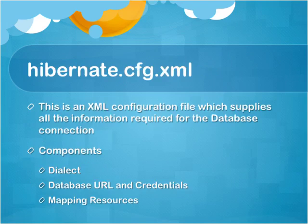The database URL and credentials are basically the remote location of the database if it is remotely located, or the localhost location if it's on your particular system. The credentials are its username and password, so that you can connect to MySQL or whichever database you're using — we'll be using MySQL throughout the tutorials. And the mapping resources tell us which POJO class is being mapped to a particular table in the database.